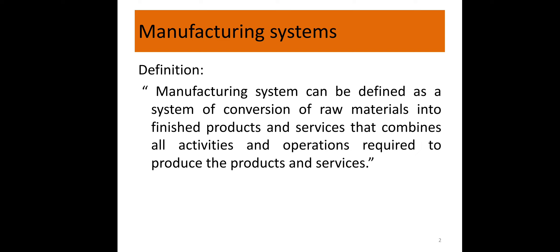For the conversion of raw material into finished products there is a combination of different activities and operations required to produce the products and services. So in another language, manufacturing systems is a combination of all activities and operations which helps to convert raw material into finished products and services. This is what we mean by manufacturing system.